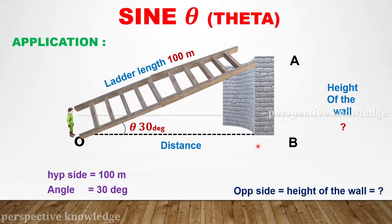We will calculate the height of the wall. We measure the angle and use the length of the ladder. We substitute into the sin theta formula: sin theta is equal to opposite side divided by hypotenuse. The angle is 30 degrees.